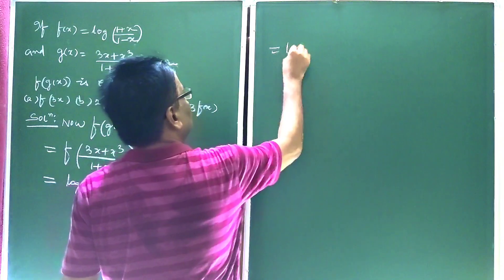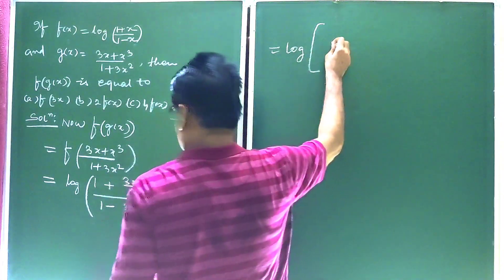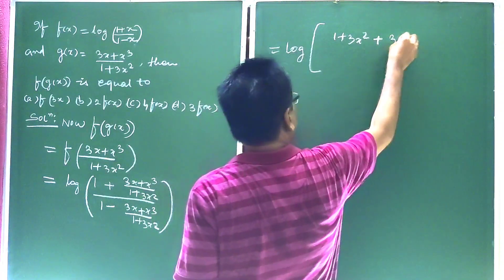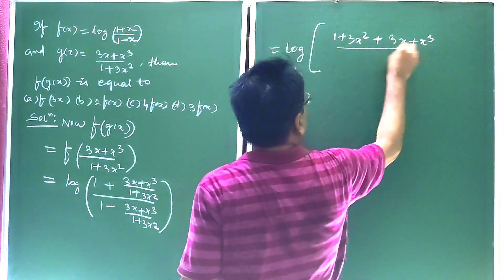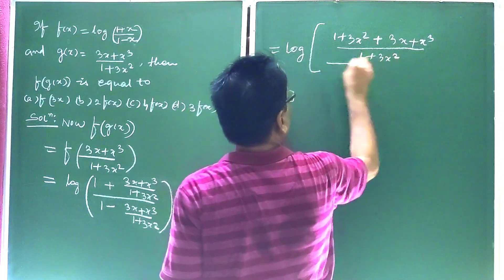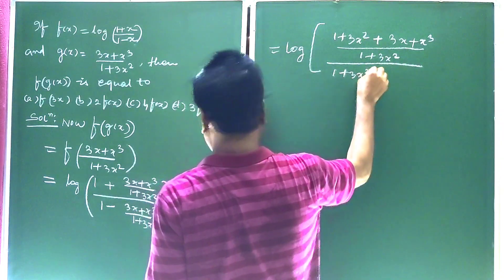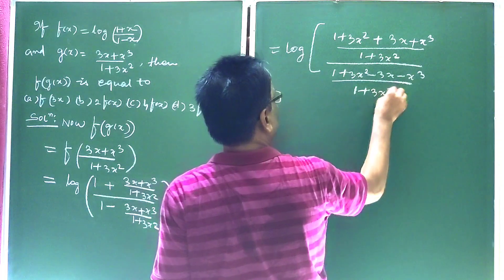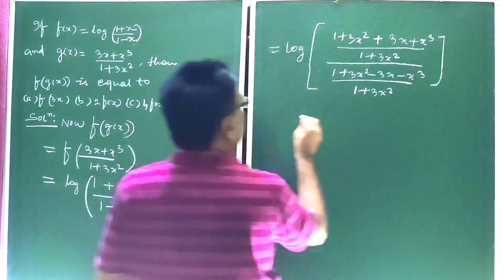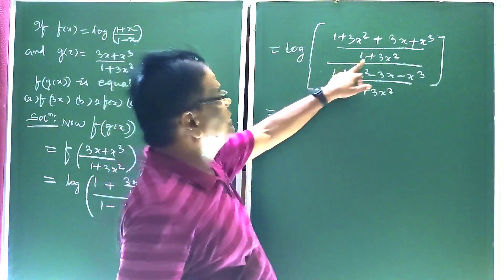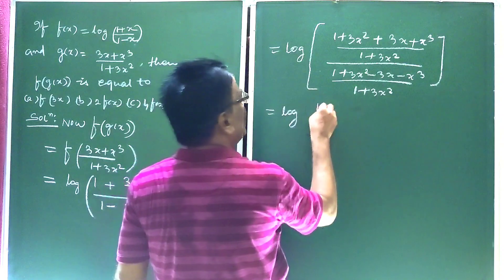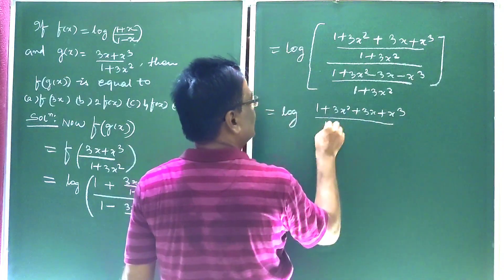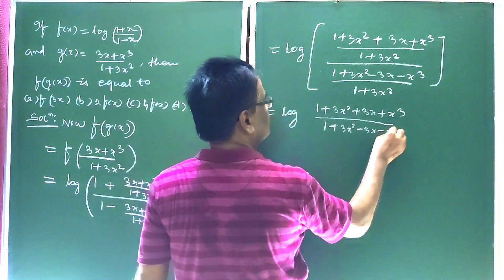This equals log of: numerator = (1 + 3x²) + (3x + x³), divided by denominator = (1 + 3x²) − (3x + x³). So we have log of (1 + 3x + 3x² + x³) divided by (1 + 3x² − 3x − x³).